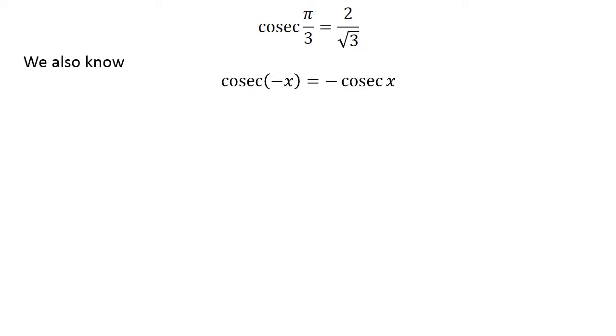We also know the identity cosecant of minus x equals minus cosecant of x. The verification of the identity has been explained in the video appearing in the upper right corner of this video. The link of the video is also mentioned in the description section.